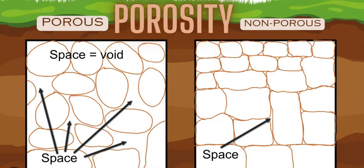On the left we have a rock with a lot of space and the potential for water to fill the gaps within the rock material. On the right we have a non-porous rock with less space available for water to fill any gaps, and if water does fill those gaps, it is hard to transfer water down between the rock spaces through gravity.